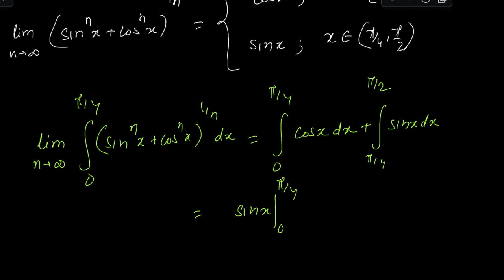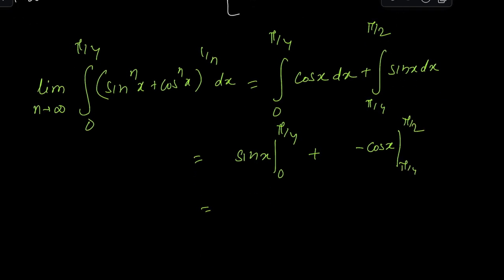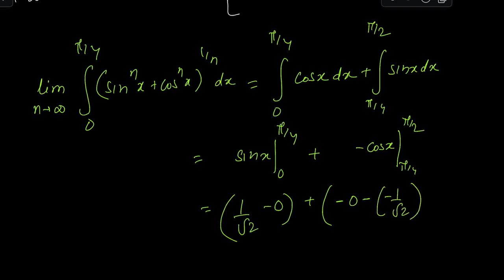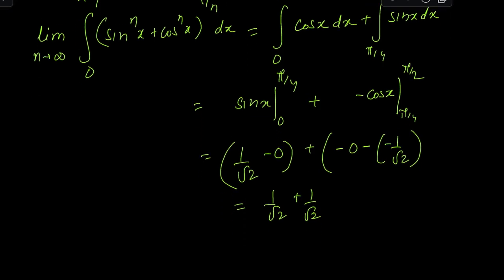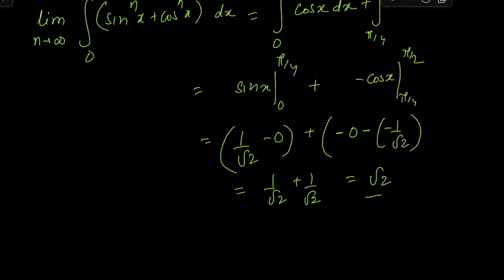The integral of cos(x) is sin(x), evaluated from 0 to π/4, giving sin(π/4) − sin(0) = 1/√2. The integral of sin(x) is −cos(x), evaluated from π/4 to π/2, giving −cos(π/2) + cos(π/4) = 0 + 1/√2 = 1/√2. Adding the two results: 1/√2 + 1/√2 = √2. So the answer to this integral is √2.